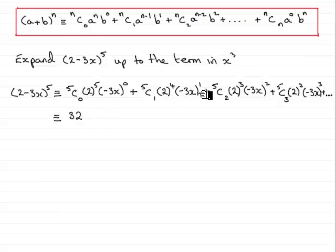Moving on to the x term here. Or, the second term in. 5c1 is 5. 2 to the 4. That's 16. And, minus 3x to the power of 1 is just simply minus 3x. So, if you multiply all that together, you should find you get minus 240x.